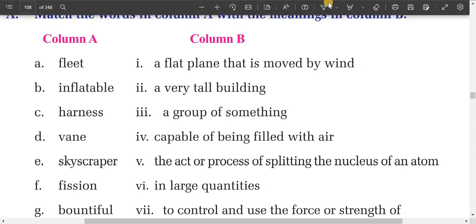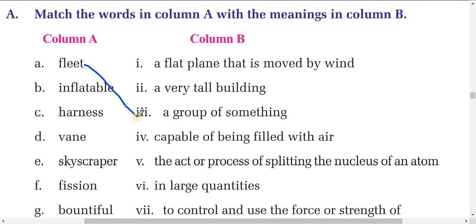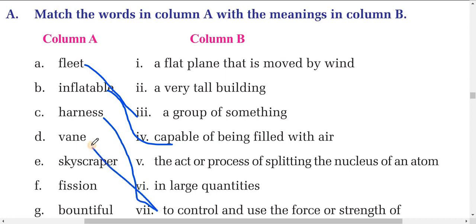The first word is 'fleet.' Fleet means a group of something — a group is called a fleet. Next, 'inflatable' means capable of being filled with air — this is called inflatable. Then 'harness' — harness means to control and use the force or strength of something.